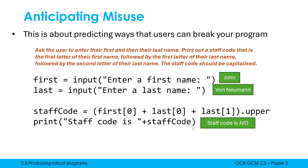We then convert it to uppercase as the question asked for, and I'm just printing it out in a nice little message. This is an example of where my program is absolutely fine, but it's not the most defensive because the user could type something in which could break it. Have a little think about what could be typed in which would cause an error here.